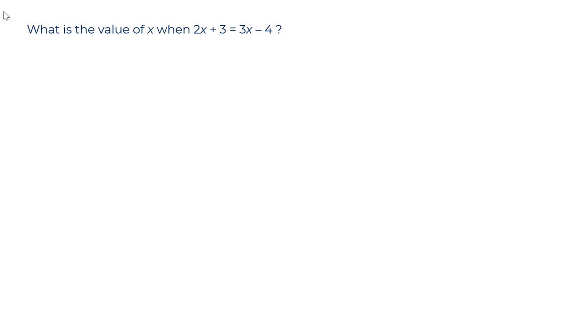What we want to do here is have our x's on one side of the equation and our numbers on the other side. Simplest way to do that, and I'll write the 2x plus 3 equals 3x minus 4 again.